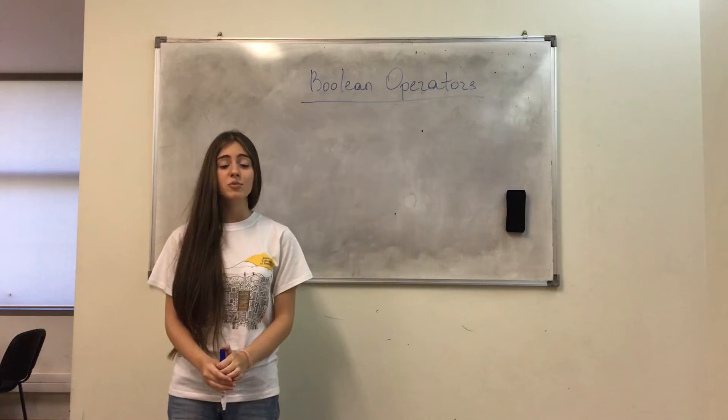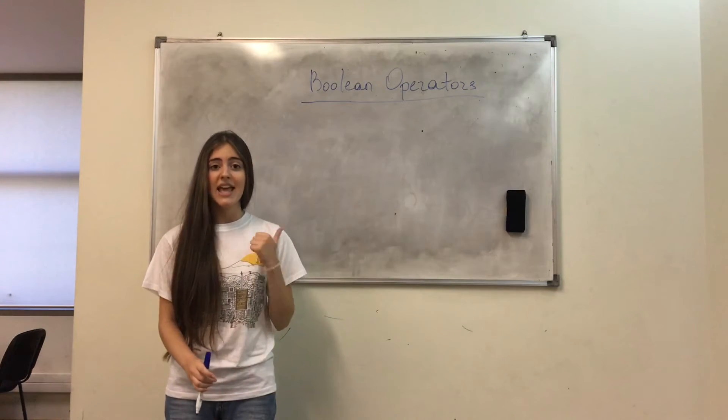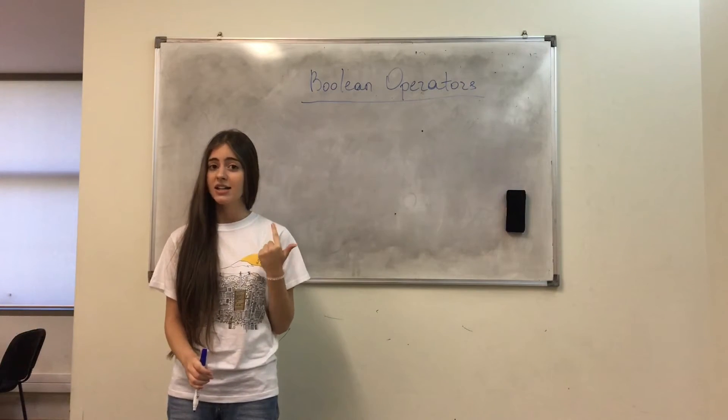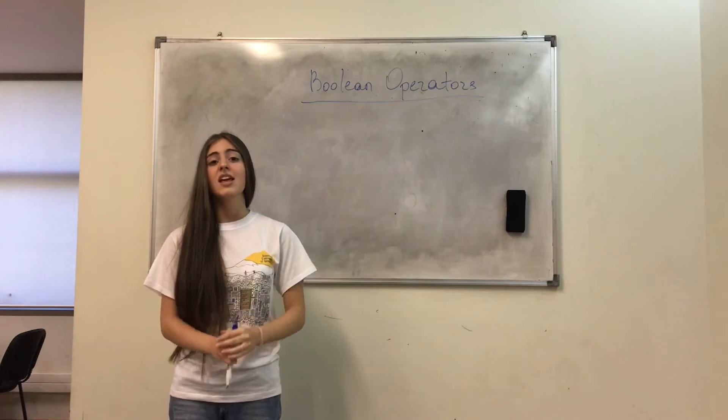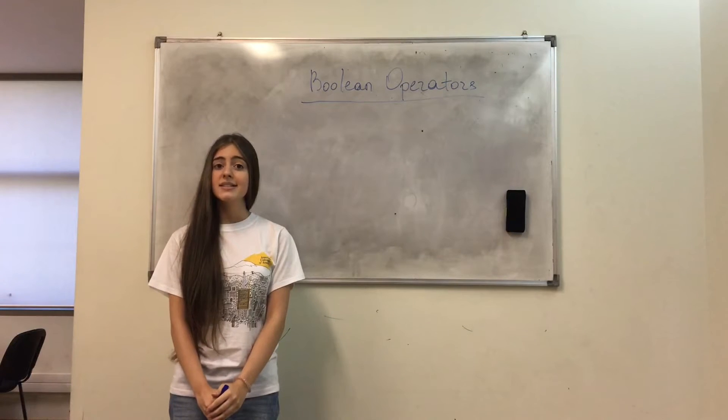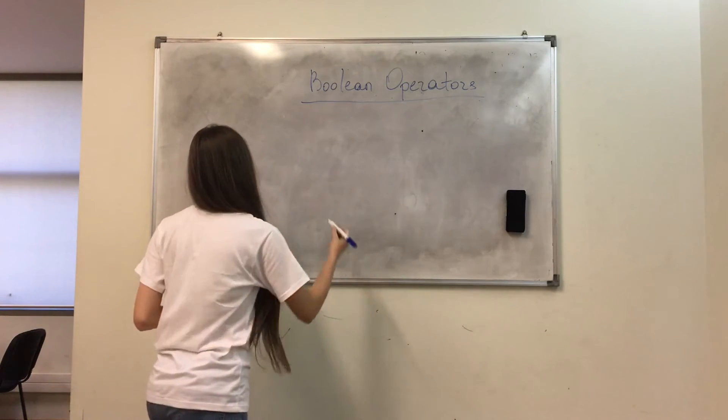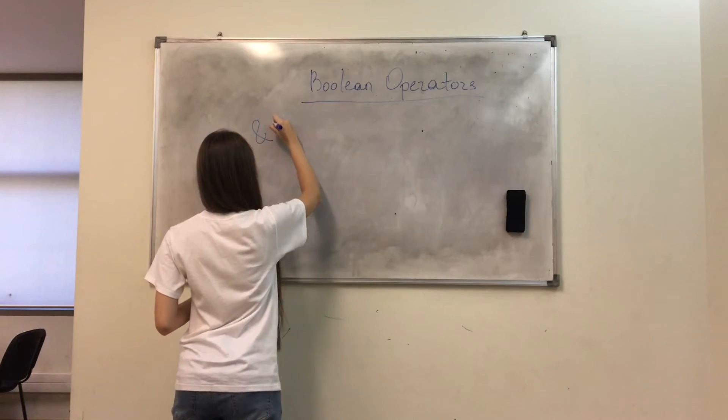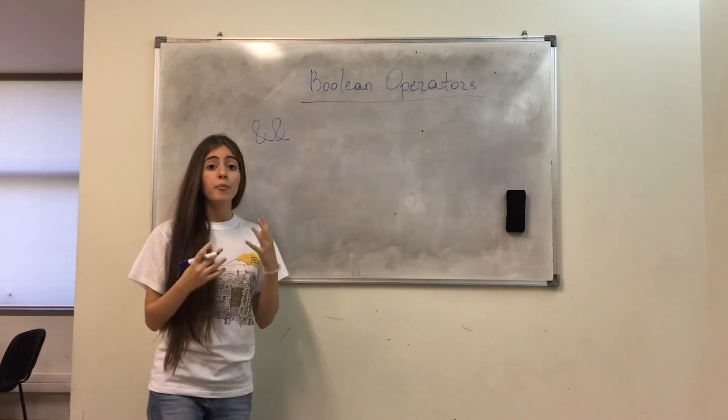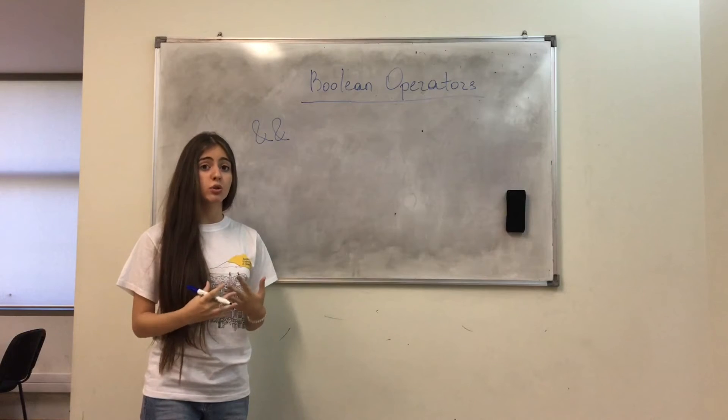There are three kinds of Boolean Operators: AND, OR, NOT. Boolean Operators consist of two conditions. For AND operator, both of the conditions should be true.